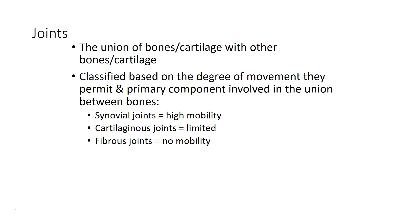When bones or cartilages come together, we have a joint. Joints are classified based on the degree of movement they allow and what kinds of movement can happen. The book goes into quite a bit more detail on different types of joints, but I'll cover it at a broad level here. All those different types of joints won't be a big focus for this class, though you may run into a question on a quiz or exam.